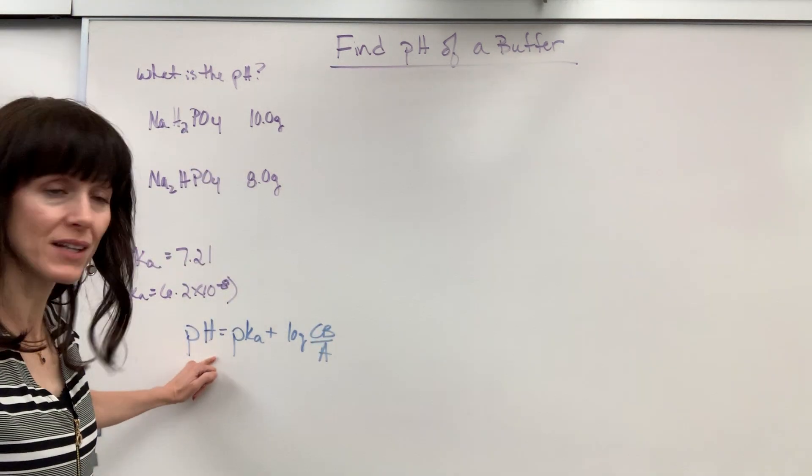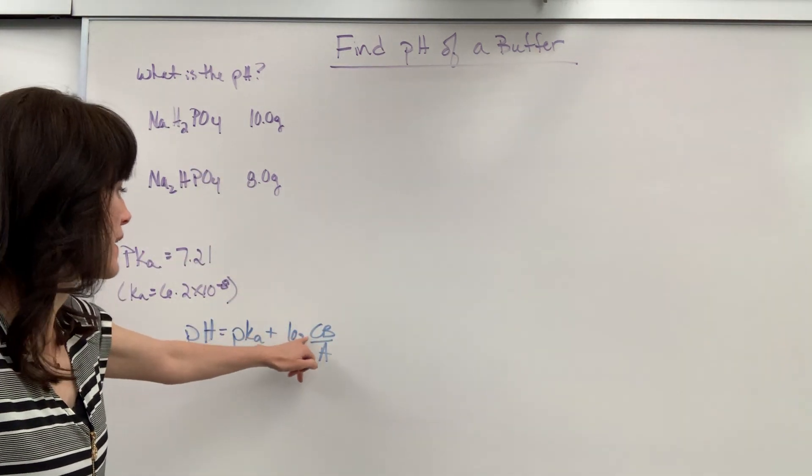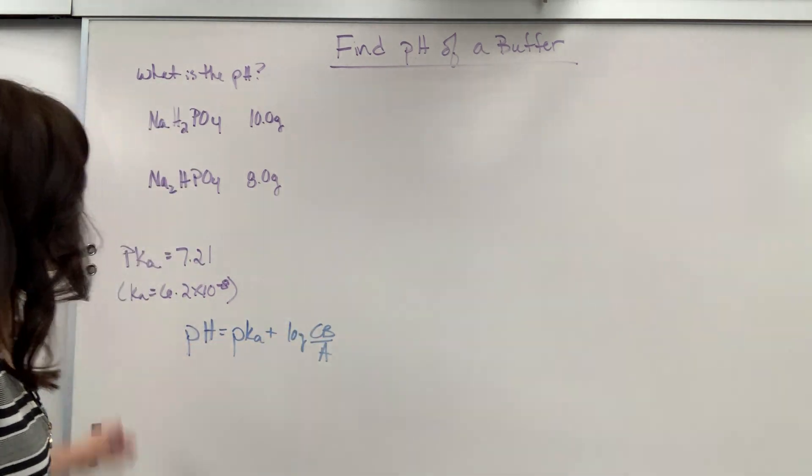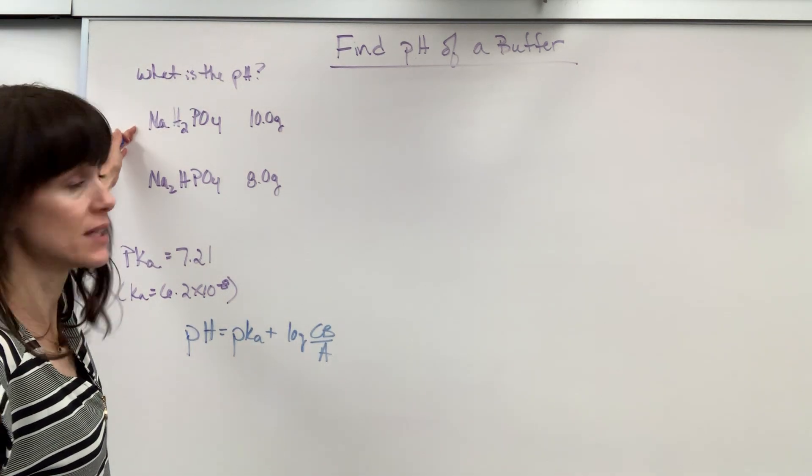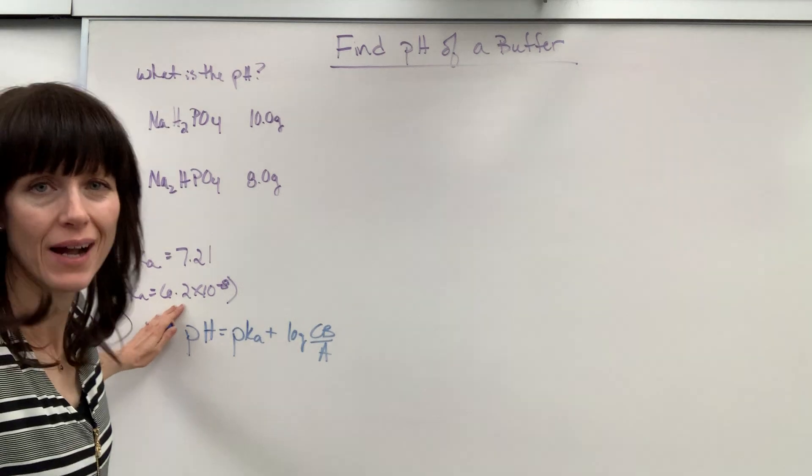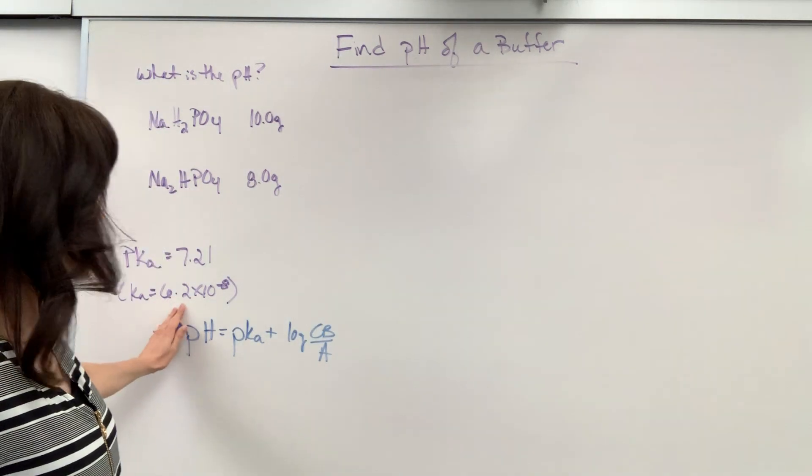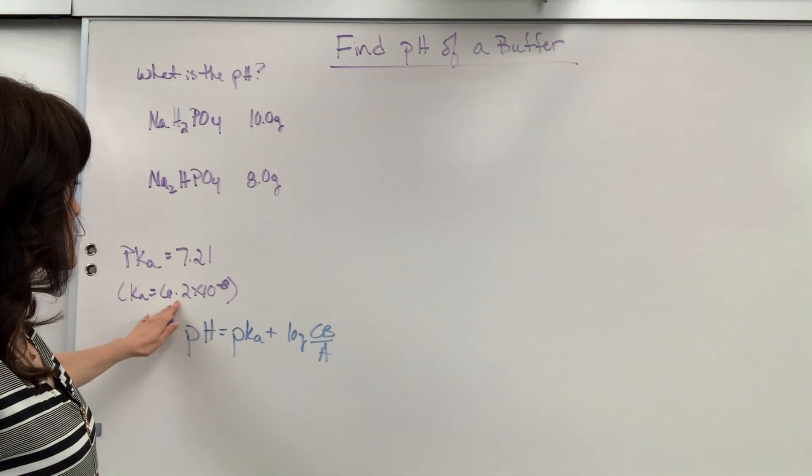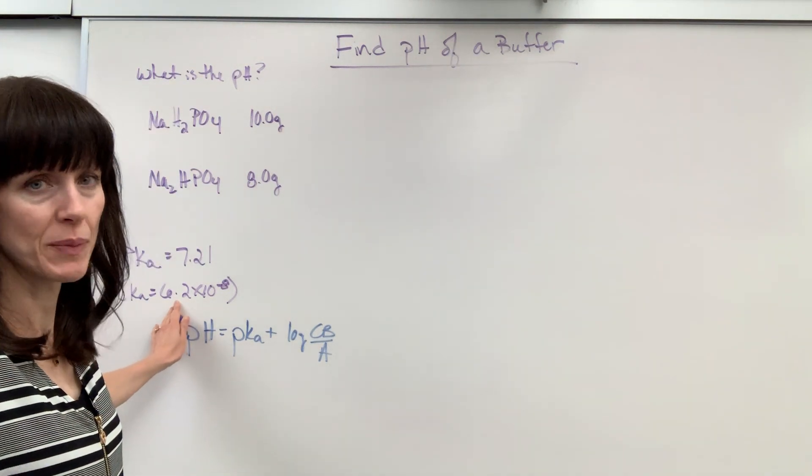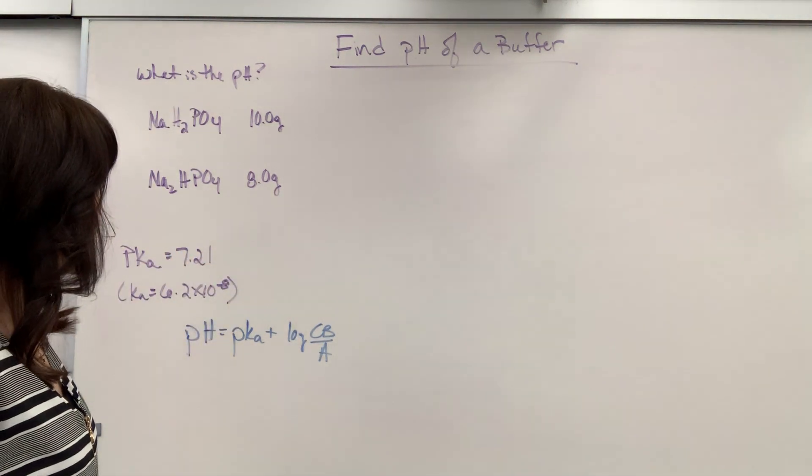pH equals pKa plus the log of conjugate base over the acid. So if I want pH I need pKa and then either the molarity or moles for the conjugate base and the acid. Well the pKa for our acid right here which is the dihydrogen phosphate is 7.21 and I just got that by looking at the Ka value which is 6.2 times 10 to the minus 8 and I did negative log. You can watch other videos on the acid base equilibrium playlist if you need help with that.